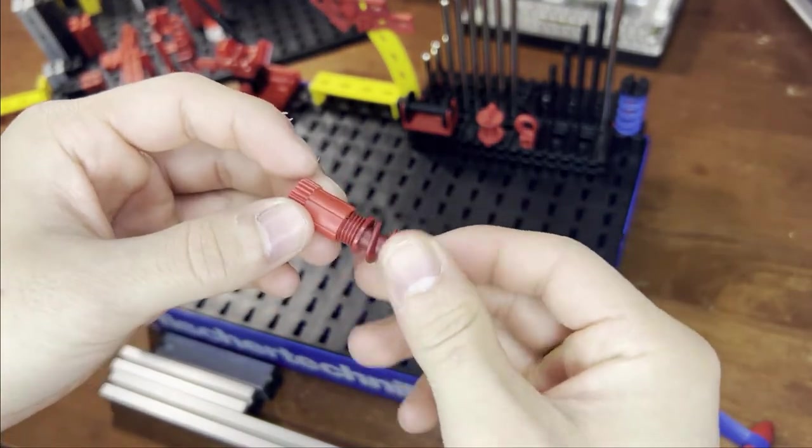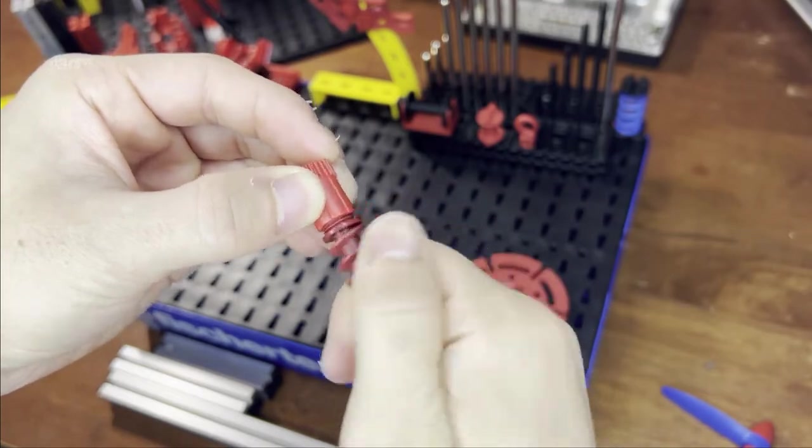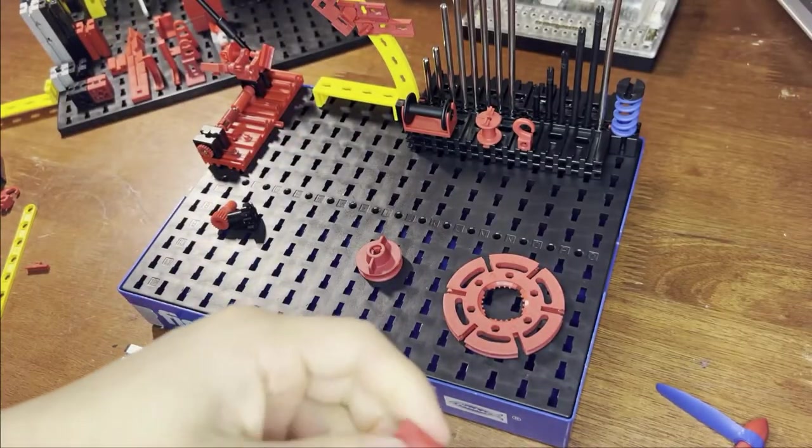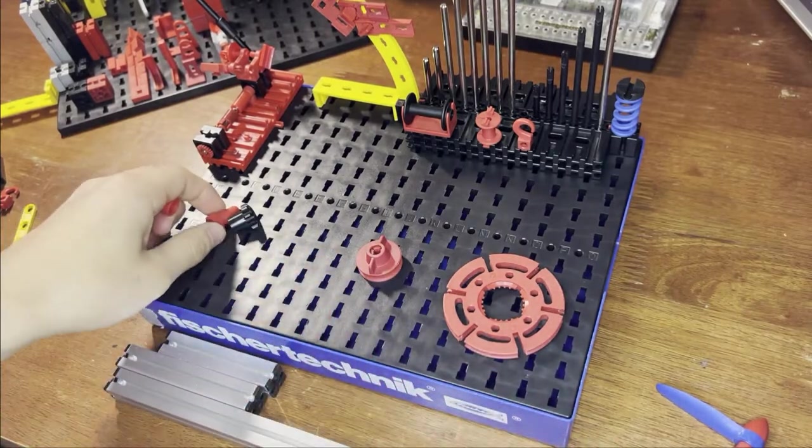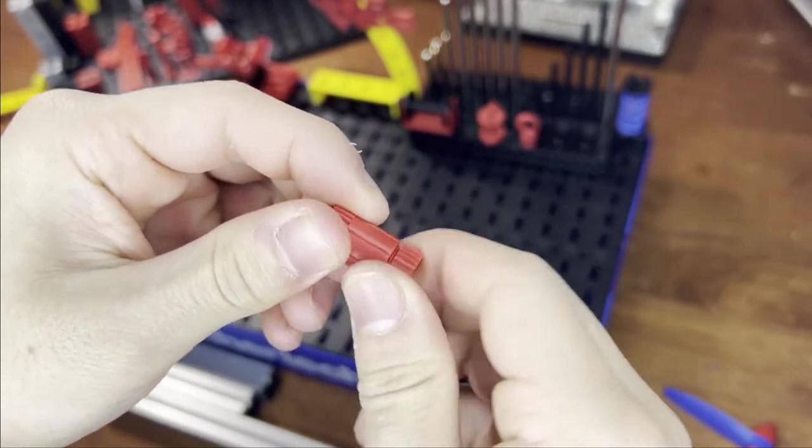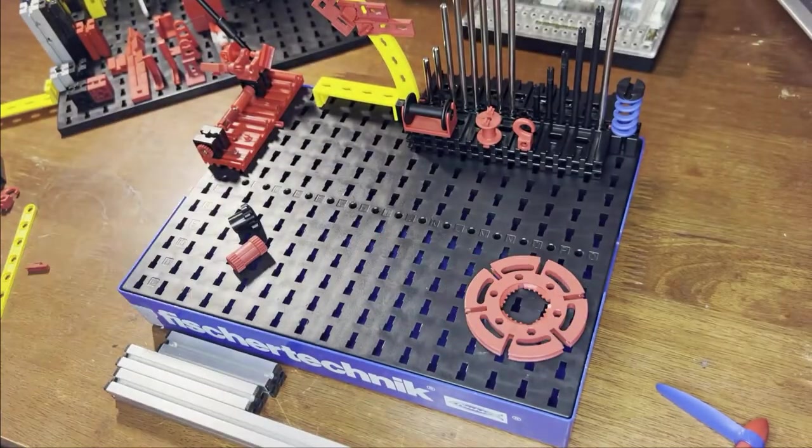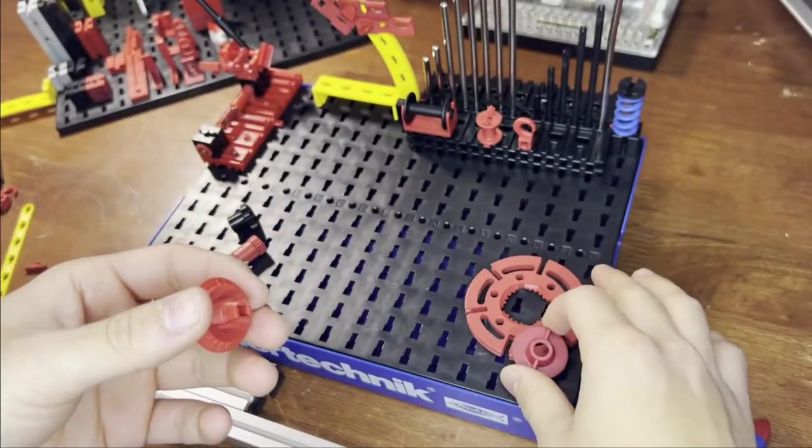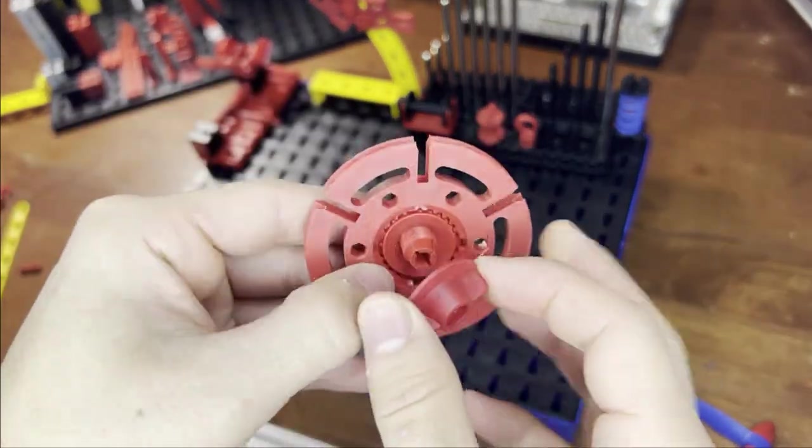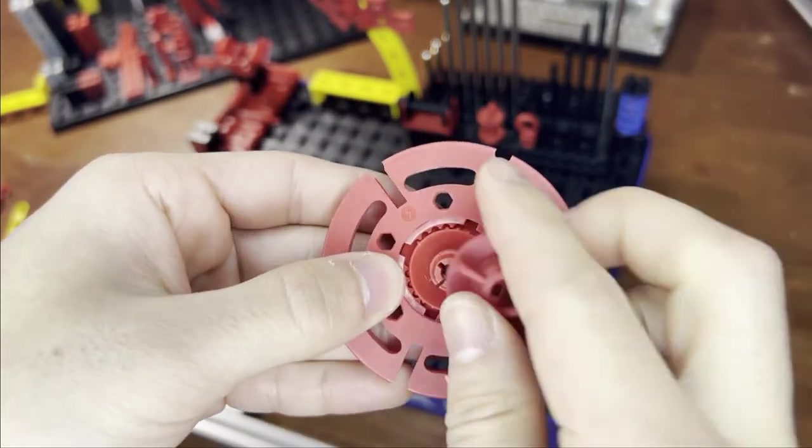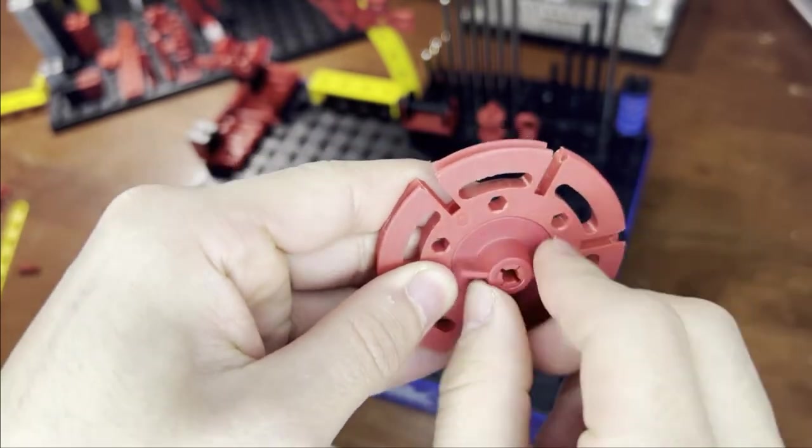And we use a hub nut, which has the threads on the inside instead of the outside, to receive things like this worm with a screw on the end. And so these two can screw into each other.